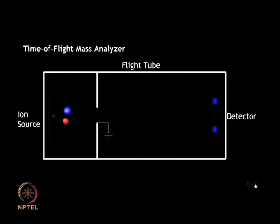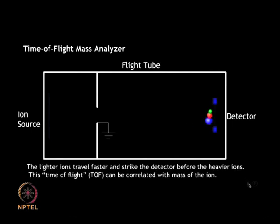The time of flight tube can be operated in linear mode or reflectron mode, depending on the sample to be analyzed. In the case of small molecules, linear mode usually provides sufficient resolution. The generated ions are accelerated towards the detector with lighter ions traveling through the TOF tube faster than heavier ions. The lighter ion strikes the detector before the heavier ion, and this time of flight can be correlated with the mass to charge ratio.